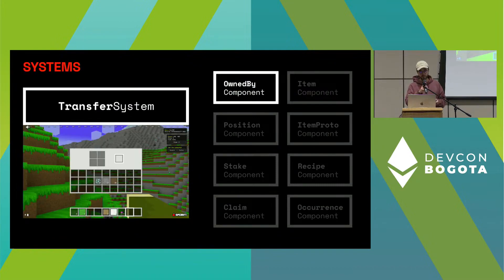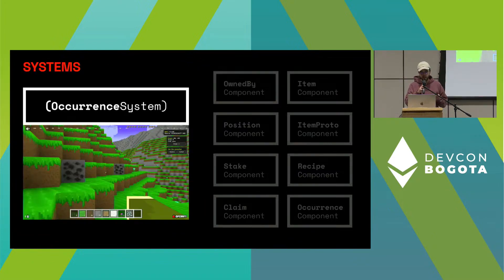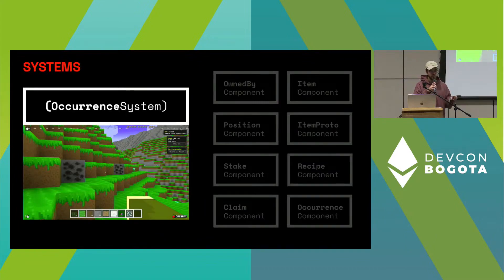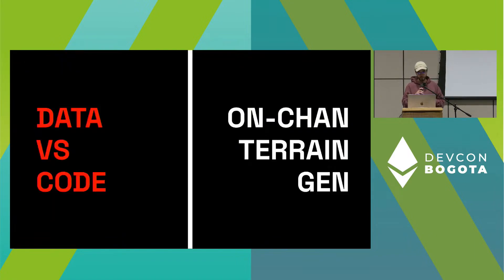Then we have the transfer system, which is very trivial. It just changes the owned by component, transferring the block from your inventory to somebody else's inventory. And finally, we have the occurrence system, which is not really a system because it doesn't act on any components — it's basically a pure function. But we still use the system pattern in order to take advantage of the entire MUD infrastructure. And with that, you have an overview of the entire architecture of OPCraft.